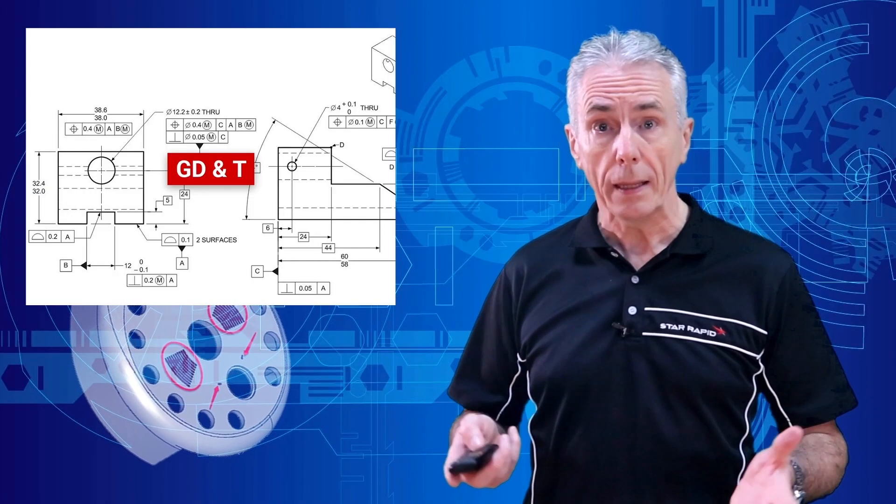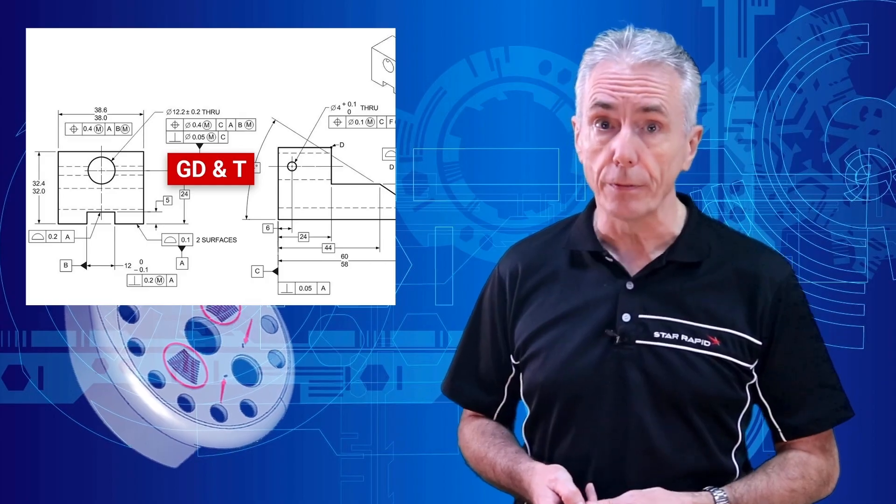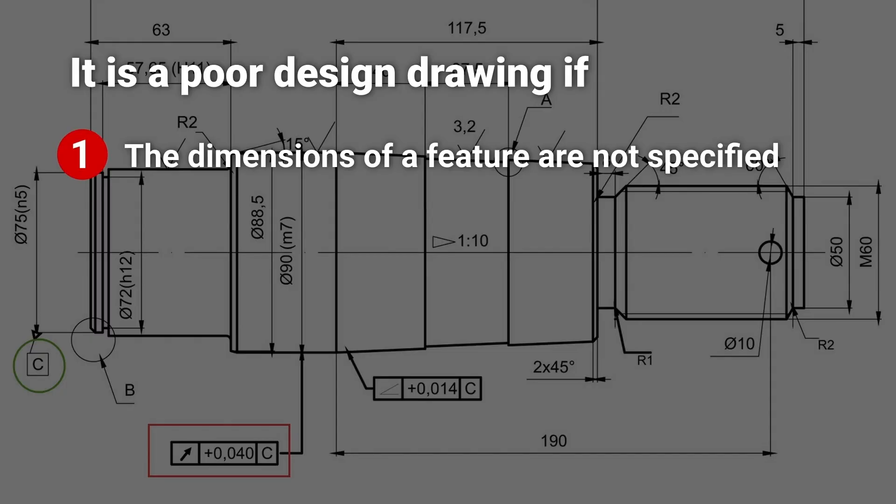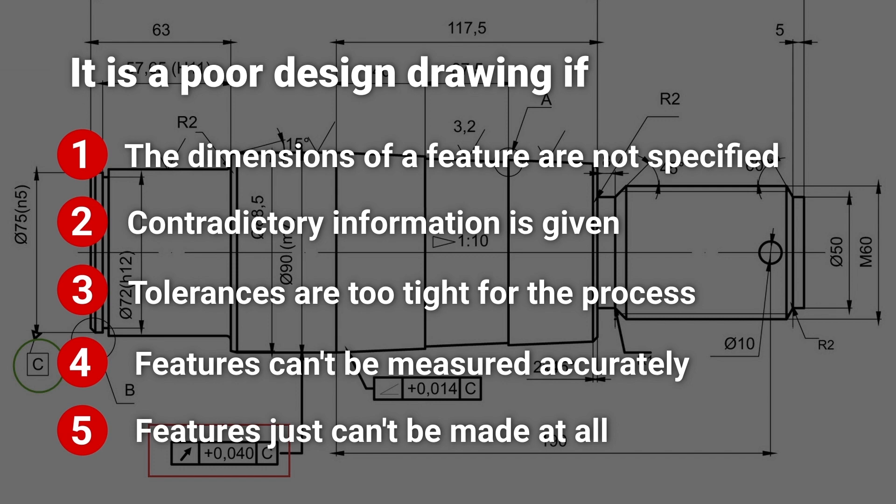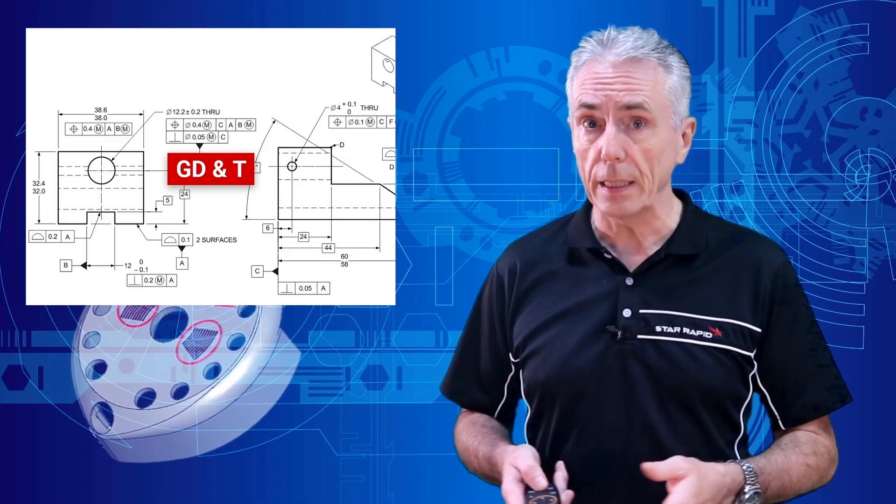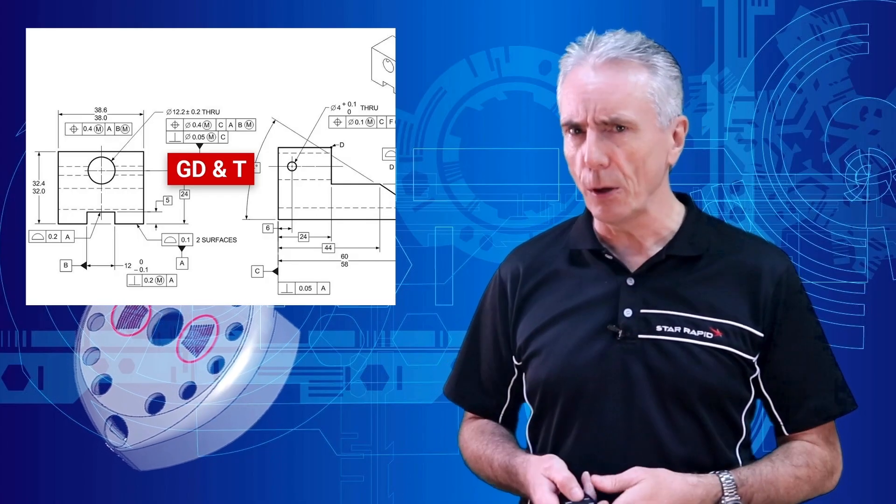What kinds of problems? Well, it's a poor design drawing if one, the dimensions of a feature are not specified; two, contradictory information is given; three, tolerances are too tight for the process; four, features can't be measured accurately; and five, features just can't be made at all. These are just a few examples of what can go wrong and you know who you are.